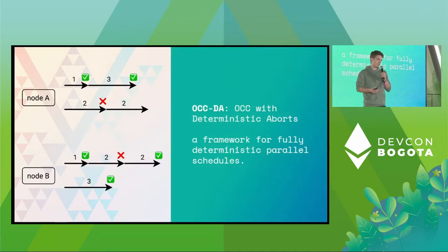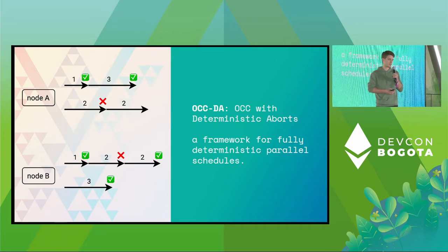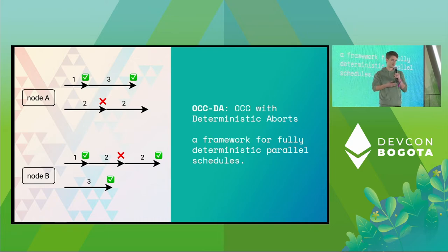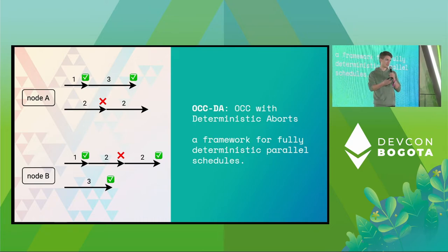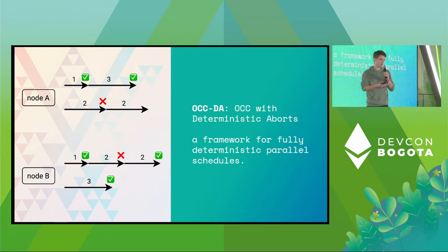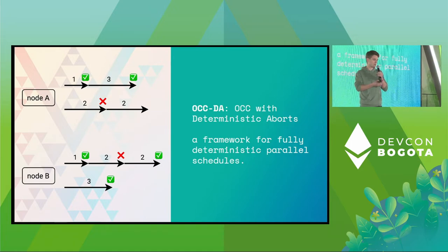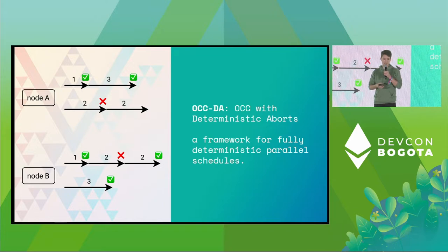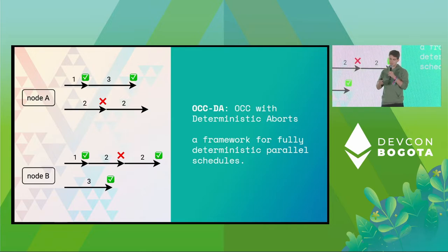For this, we came up with a new scheduling framework called Optimistic Concurrency Control with Deterministic Aborts, or OCCDA. The idea is simple: instead of deciding abort and commit decisions during runtime, you make these decisions prior to running the transactions in a deterministic way. These decisions will then be deterministically the same on all nodes, and even if you attach incentives to these decisions, the final state that different nodes arrive at will be the same.